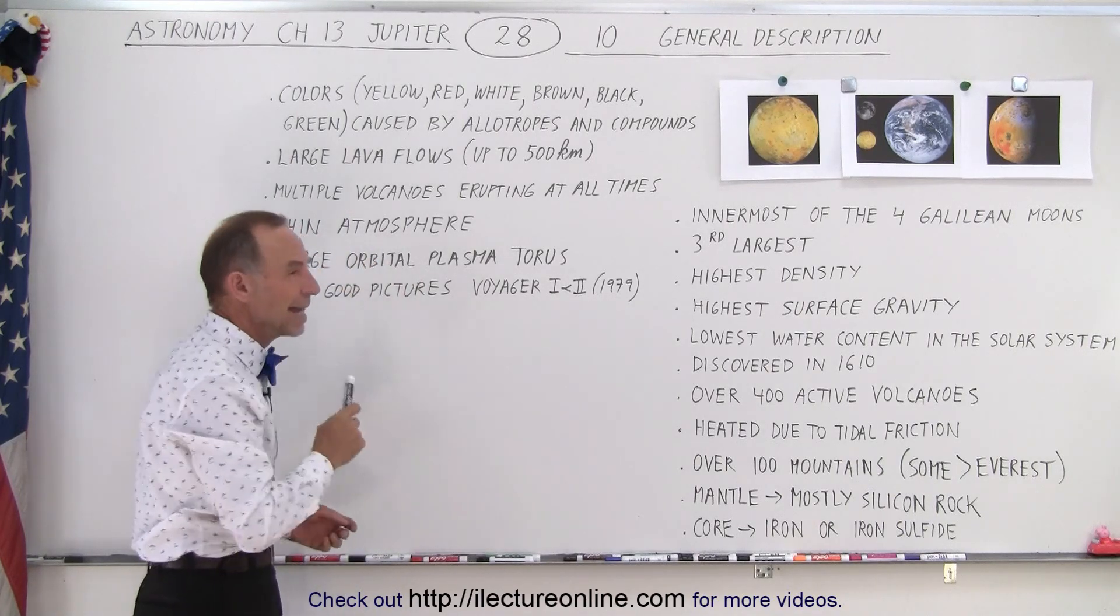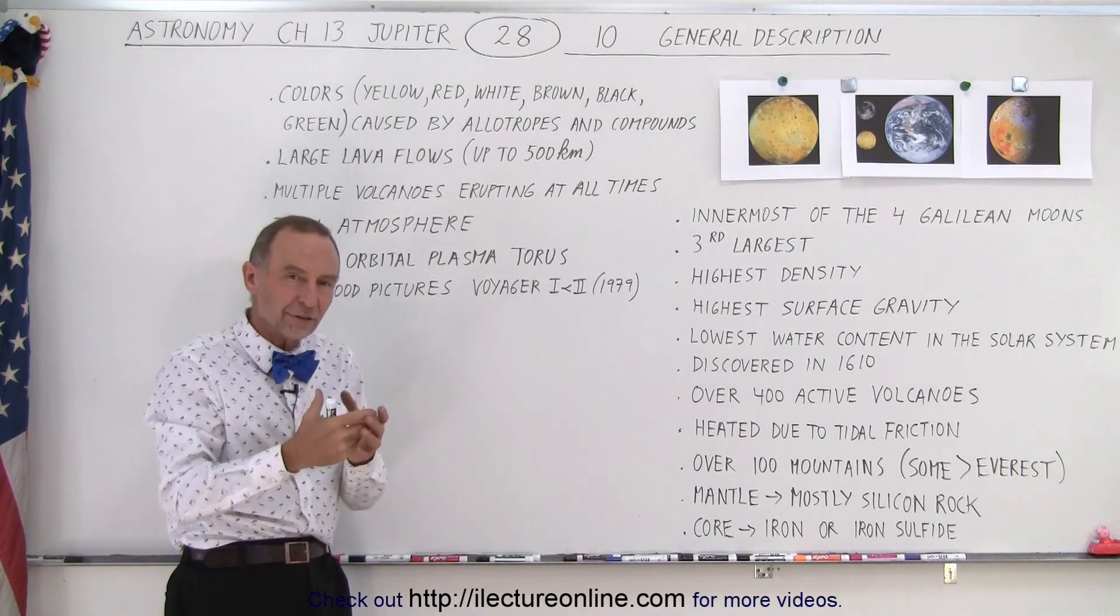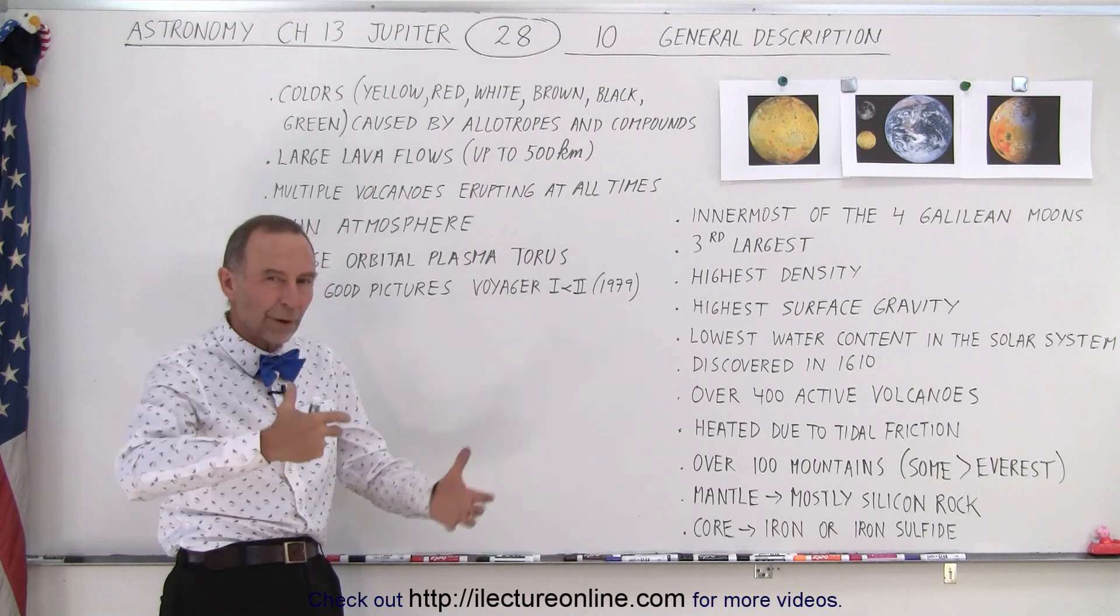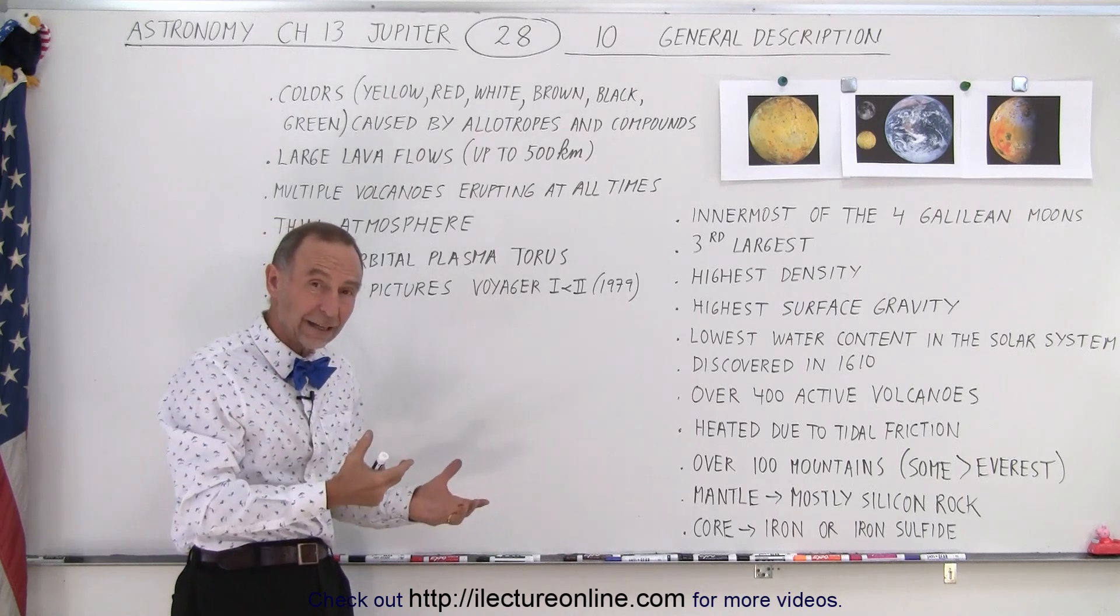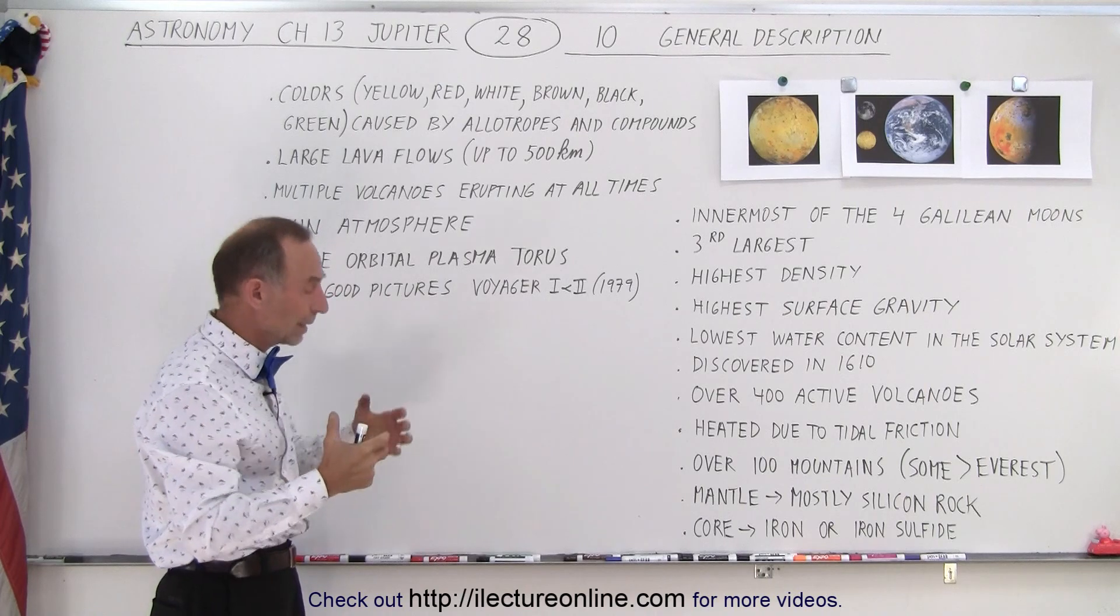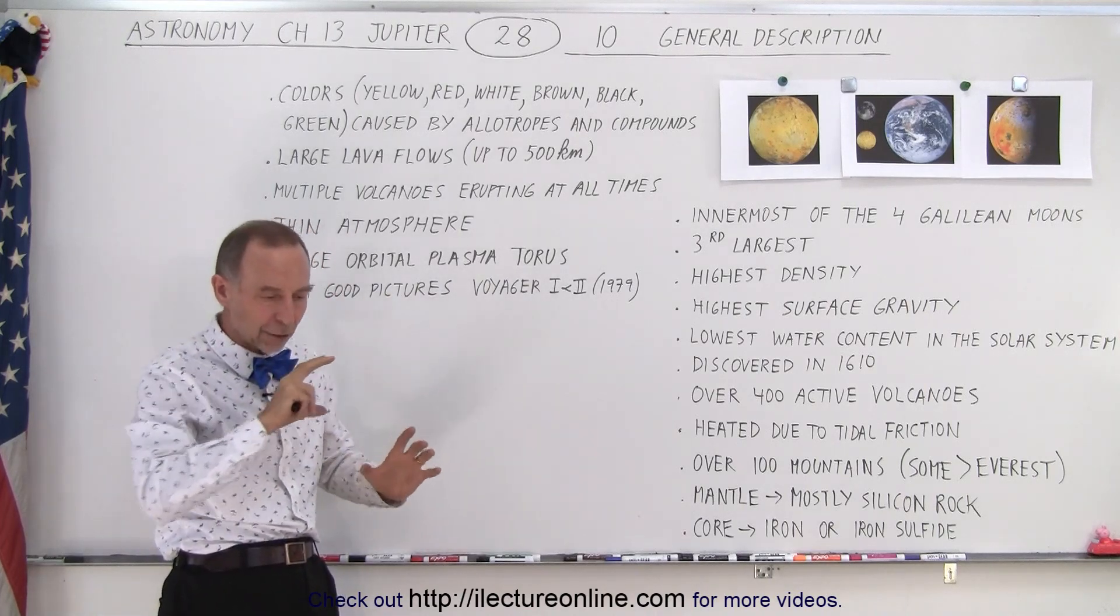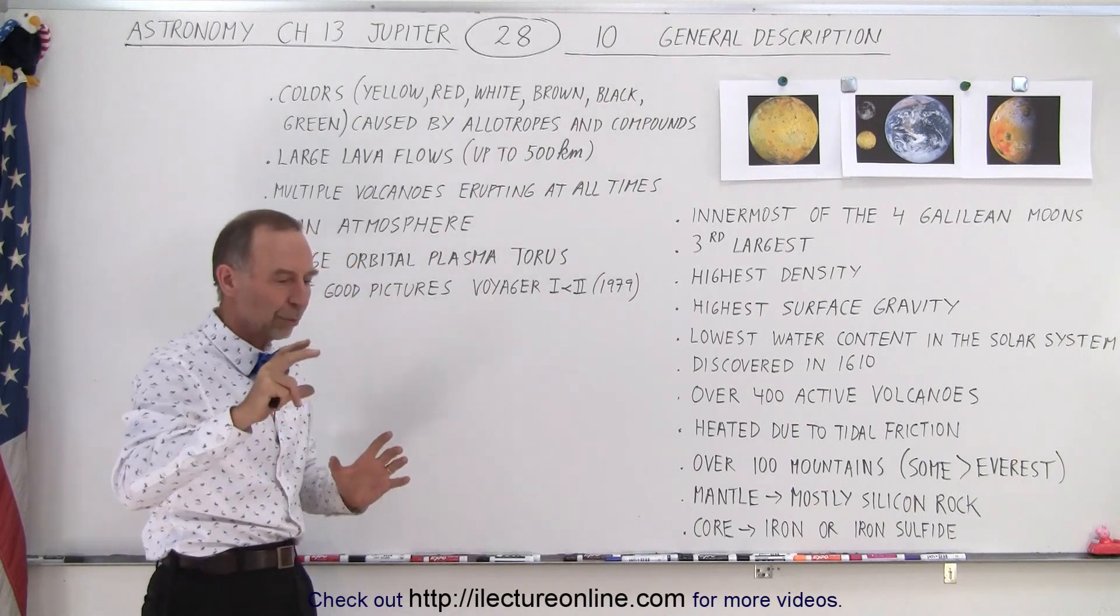And therefore we have a thin atmosphere. A lot of the gases do get trapped gravitationally for some time before they get ripped away from the surface due to the magnetic field interaction with the strong magnetic field of Jupiter and the ionization of the region around which Io has its orbit around Jupiter.